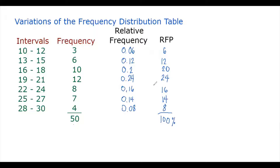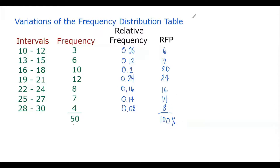So these are the relative frequency, which is just the ratio between the frequency of the class interval and the total number of observations in the distribution. Just divide the class frequency by the total to get the relative frequency, and to get the relative frequency percentage, multiply the relative frequency by 100%. So 6 + 12 + 20 + 24 + 16 + 14 + 8 equals 100, giving 100%.